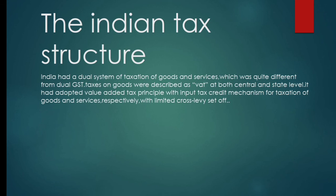India had a dual system of taxation of goods and services which was quite different from dual GST. Before the launching of GST in India, all taxation structures were dual taxation based in respect of goods and services. Taxes on goods were described as VAT at both center and state level, and services were taxed via service tax. It had adopted the value added tax principle with input tax credit mechanism for taxation of goods and services respectively, with limited cross levies set-off.